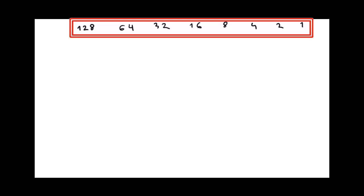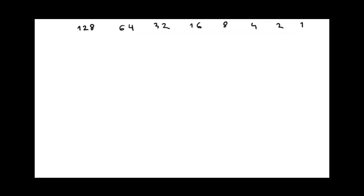We write down our borderline — the imaginary borderline between the network portion and the host portion. Once we have it, we write down the subnet mask in CIDR notation for Class C, which is /24. And now remember borrowing bits from the octet.